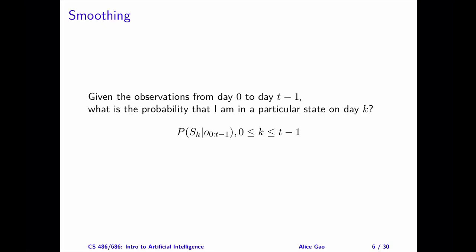Let's recall the definition of the smoothing task. Let the first time step be zero. Suppose that today is day t minus 1. Smoothing asks the following question: given the observations from day 0 to day t minus 1,